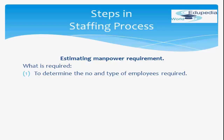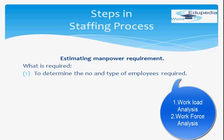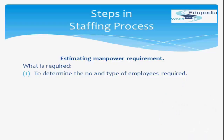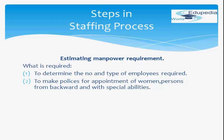Manpower requirement involves two steps: number one, workload analysis, and number two, workforce analysis. By analyzing these, it is determined whether the organization is understaffed, overstaffed, or optimally staffed. A decision is then taken whether to remove staff, add staff, or transfer staff to other branches. This also includes making policies for appointment of women, persons from backward communities, and persons with special abilities.